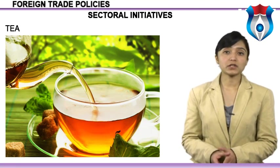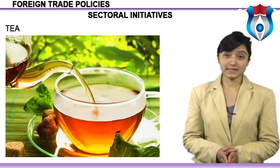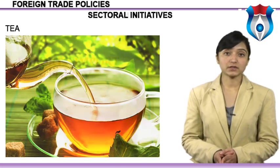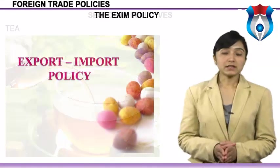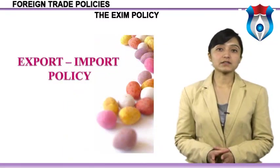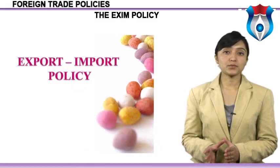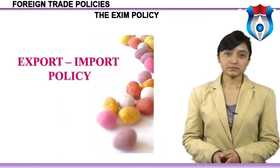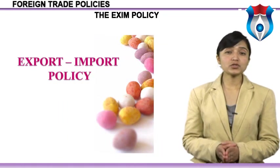Tea: minimum value addition under the advance authorisation scheme for export of tea has been reduced from the existing 100% to 50%. DTA sale limit of instant tea by EOU units has been increased from the existing 30% to 50%. Export of tea has been covered under VKGUY scheme benefits.